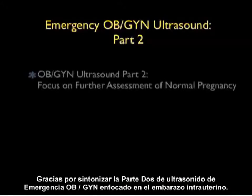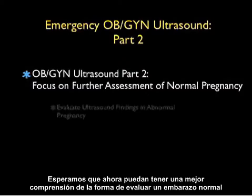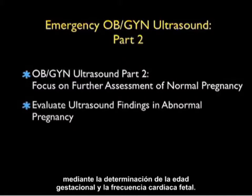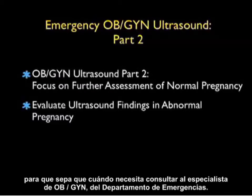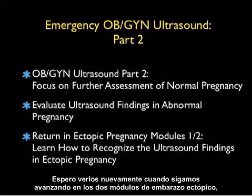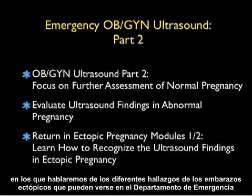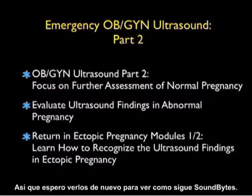Thanks for tuning in to Part 2 of Emergency OBGYN Ultrasound, focusing on intrauterine pregnancy. Hopefully you now have a better understanding of how to further assess a normal pregnancy by determining gestational age and fetal heart rate. I hope I've also given you some ultrasound findings seen in an abnormal pregnancy, so you know when to get an OBGYN consultation in the ED. I hope to see you back as we move on to ectopic pregnancy in two modules, discussing the various findings of ectopic pregnancies in the emergency department. See you back as SoundBytes continues.